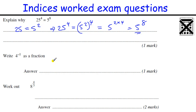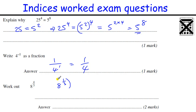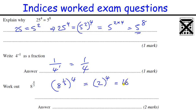4 to the minus 1: the minus means 1 over 4 to the power of 1, which is just 1 over 4. For 8 to the four-thirds: that's the cube root of 8 to the power of 4. The cube root of 8 is 2, and 2 to the power of 4 is 16.